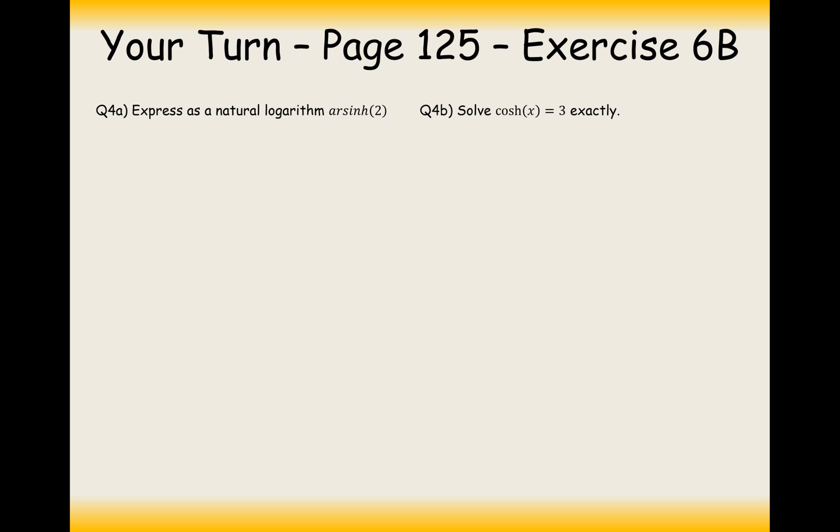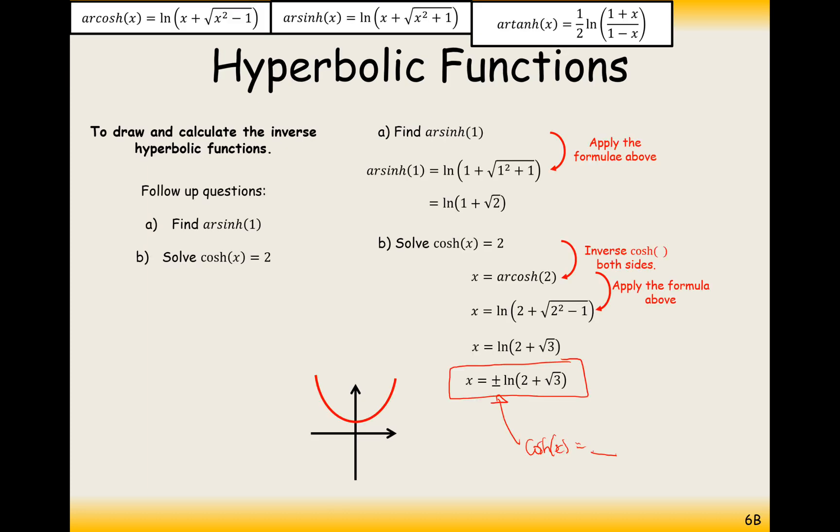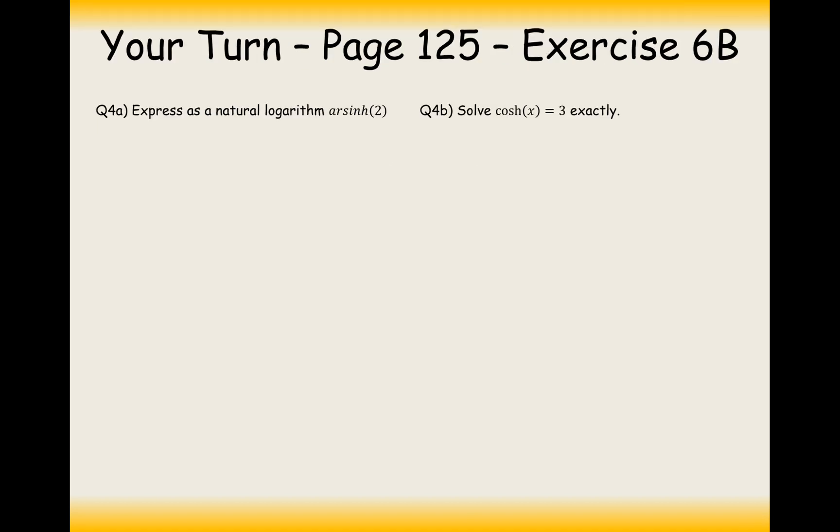Okay, so in these two questions, then we're going to need to use the formulas. Let's just remind us, arsinh is the one with x plus in. So it's going to be arsinh 2 equals ln 2 plus 2 squared plus 1. So that's going to be ln 2 plus root 5. And there we are, that's the answer for part A. And then moving on to part B, x is going to equal arcosh 3. So plug that into the formula, it's going to give you ln 3 plus the square root of 3 squared minus 1. Close brackets. And that's going to give you ln 3 plus root 8.